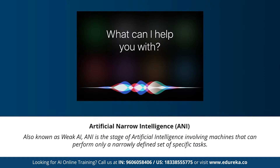Artificial narrow intelligence, also known as weak AI, is a stage of AI that involves machines that can perform only a narrowly defined set of specific tasks. At this stage, machines don't possess any thinking ability — they just perform a set of predefined functions. Examples of weak AI include Siri, Alexa, AlphaGo, Sophia, and self-driving cars. Almost all AI-based systems built to date fall under the category of weak AI or artificial narrow intelligence.